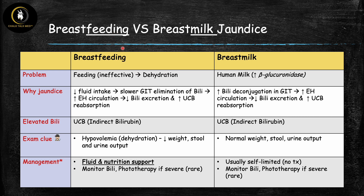Now let's talk about the differences between breastfeeding and breast milk jaundice. With both, the focus should be on the second part of the name. For breastfeeding jaundice, the key word is 'feeding' — the problem is that feeding is ineffective. There are many reasons breastfeeding can be complicated: mom may not make enough milk, there may be trouble with latching, or there may be a breast infection such as mastitis. Whatever the cause, ineffective feeding leads to decreased oral intake, so the neonate becomes dehydrated.